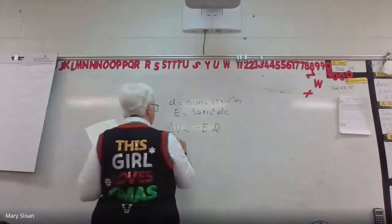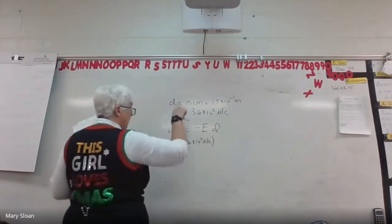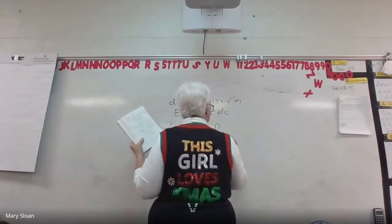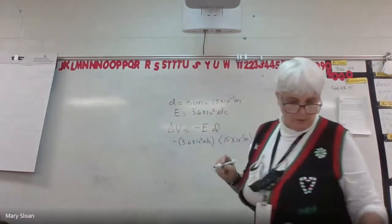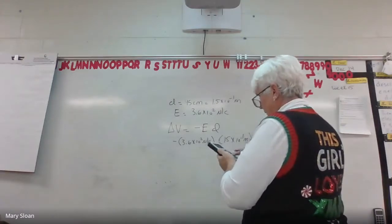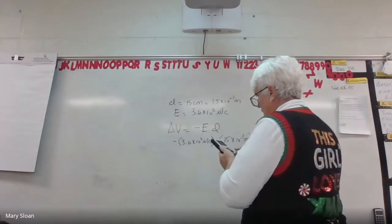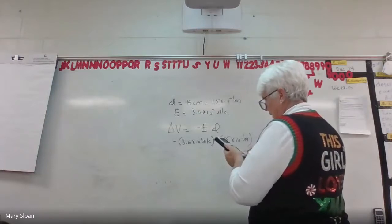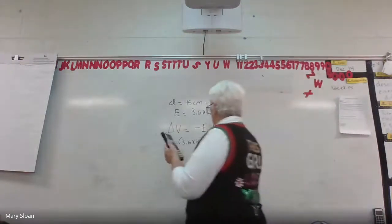We're going to do negative 3.6 times 10 to the 2, multiplied by our distance of 1.5 times 10 to the negative 1 meters. Calculating: negative 3.6 times 10 to the 2, close bracket, times 1.5 times 10 to the negative 1. I got negative 54 volts.